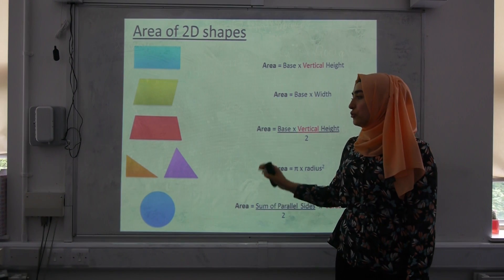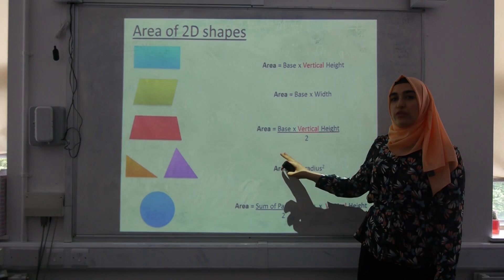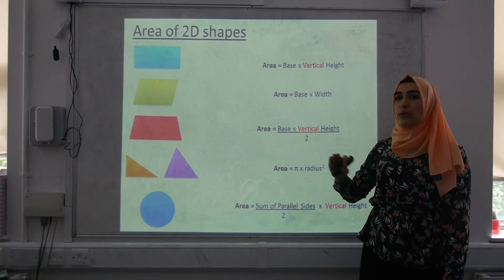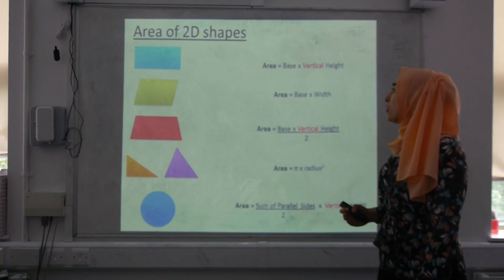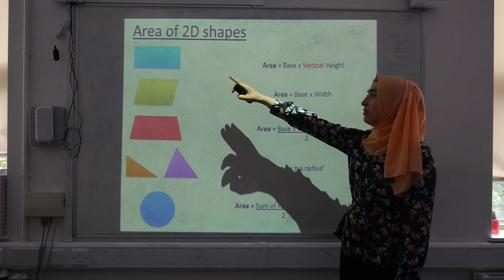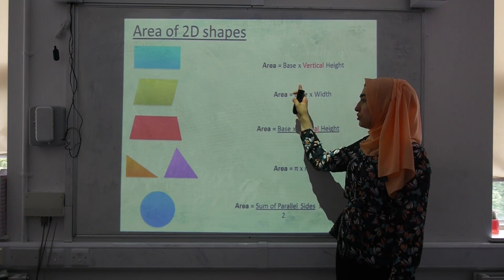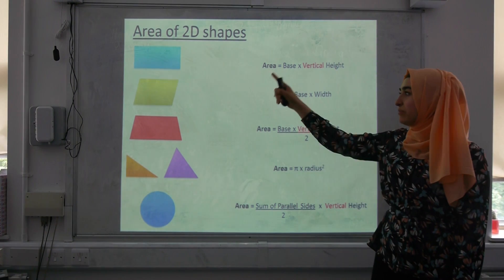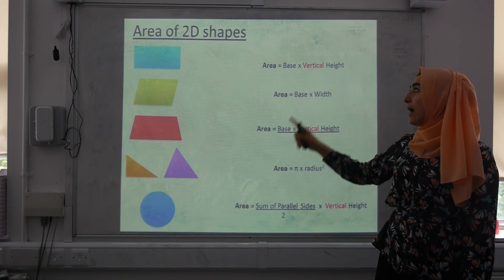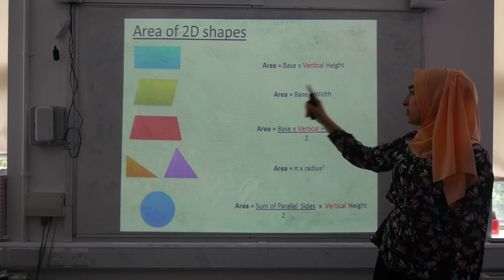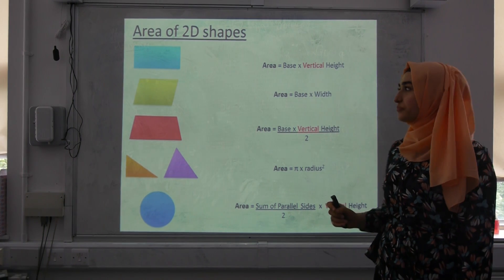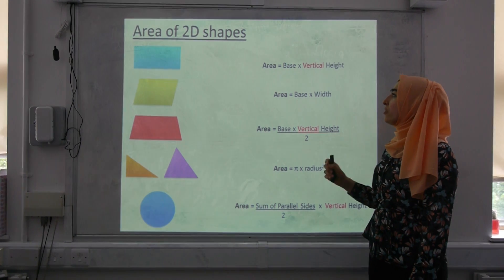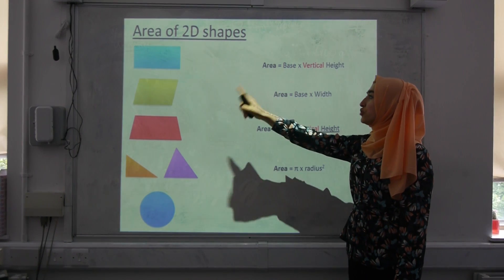Next, you already have this slide printed out, therefore there is no need for you to copy anything out into your book. All you have to do is just match the 2D shape to its area formula. So pause the video, name the shapes first, and then match the shape to its correct area formula. And once you have done that, could you also illustrate on the shape.